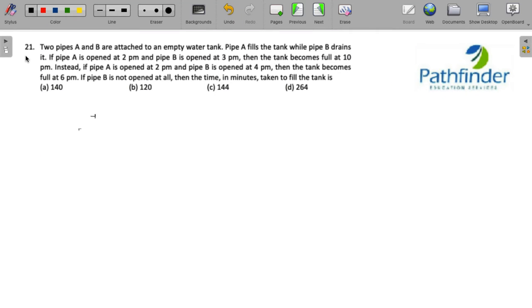CAT 2021 slot 2, question number 21. Two pipes A and B are attached to an empty water tank. Pipe A fills the tank while pipe B drains. If pipe A is opened at 2 p.m. and pipe B is opened at 3 p.m., the tank becomes full at 10 p.m.